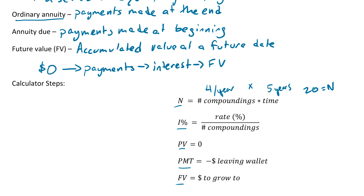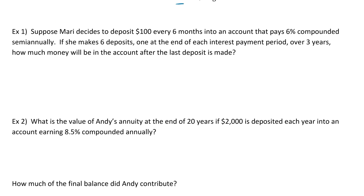The payment, PMT, is how much you're putting in every time, and it always has to be negative. If you are putting a thousand dollars into an account, you enter that as negative one thousand dollars, because that's money leaving you. The future value is the amount that will be in the account at the end. Let's take a look at the first example.